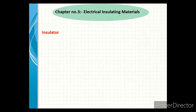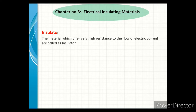First of all, let's see what is meant by insulator. The material which offers very high resistance to the flow of electric current is called an insulator. Next, we see the properties of insulator — three properties: electrical property, mechanical, and thermal.